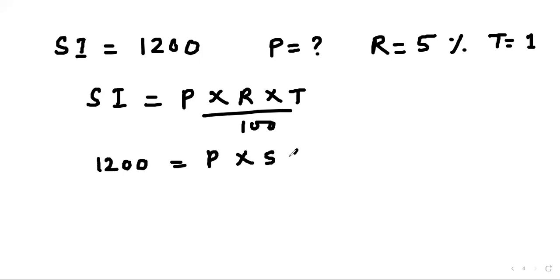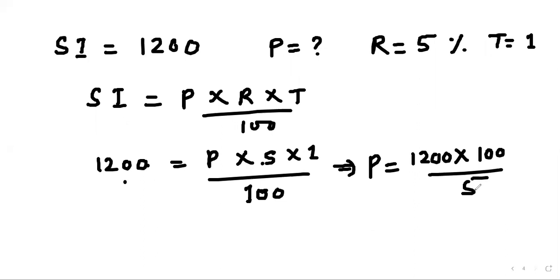The rate is 5, time is 1, divided by 100. Now we shift terms directly. The 100 in denominator becomes numerator on the other side, and the 5 in numerator becomes denominator. So we write: P = 1200 × 100 / 5. Since 5 goes into 100 twenty times, we get 24,000.